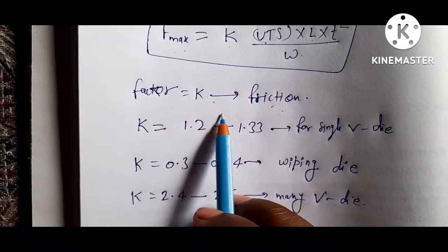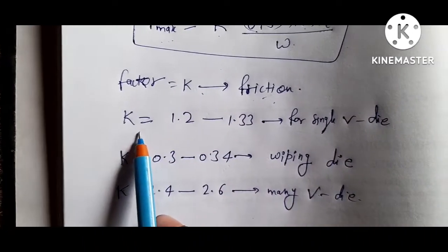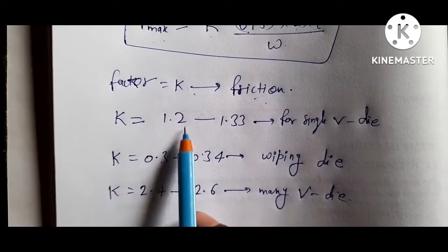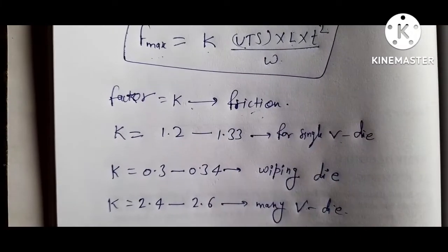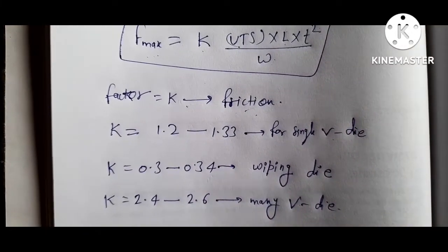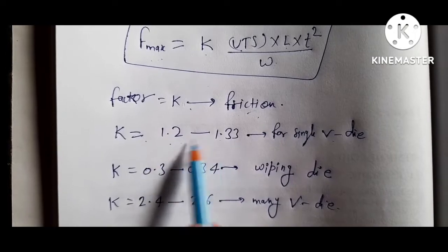This K factor depends on various factors and we take value of K equals 1.2 to 1.33 for single V die. If you use bending for a single V die, then K value is taken from between these.